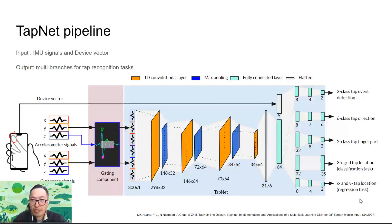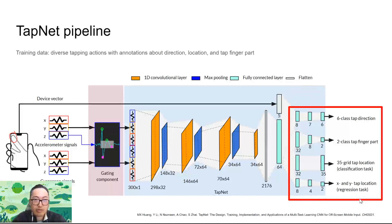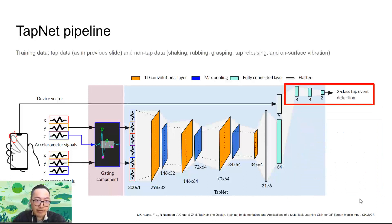Each branch is specific for one recognition task, including tap event detection, tap direction classification, finger part classification, and tap location classification as well as location regression. We take turns to train these two parts of TapNet. For the tap property recognition branches, we use diverse tapping actions with annotations about direction, location, and finger parts. For the tap event detection branch, we use both tap data and non-tap data for training.